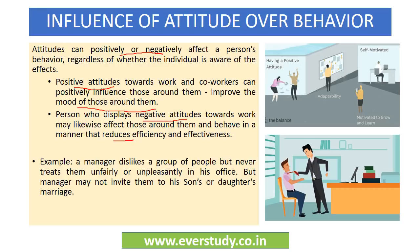Before winding up this topic, let us consider one example to understand the difference between attitude and behavior in an organization. For example, a manager dislikes a group of people, but he never treats them unfairly or unpleasantly. That is, his attitude towards this group is not positive — he does not like them — but that does not hamper his professional behavior. He does not withhold resources from them or speak to them badly. However, even if it does not affect his professional behavior, it may still affect his other behaviors.